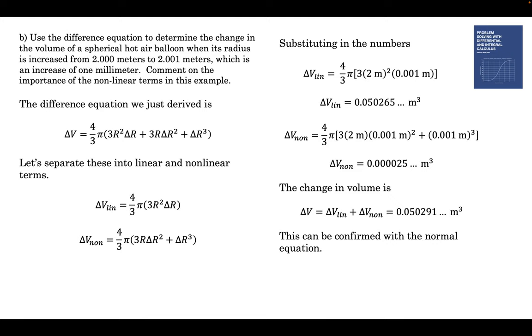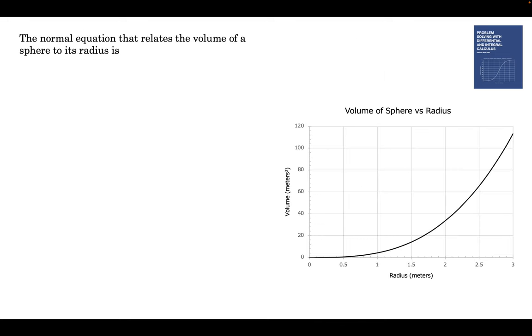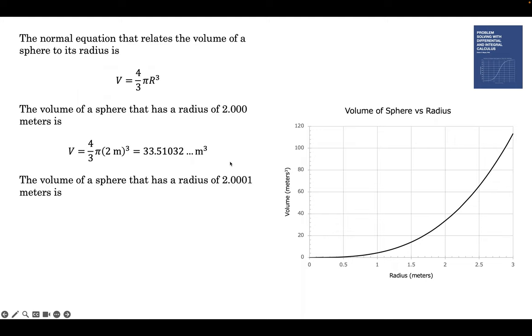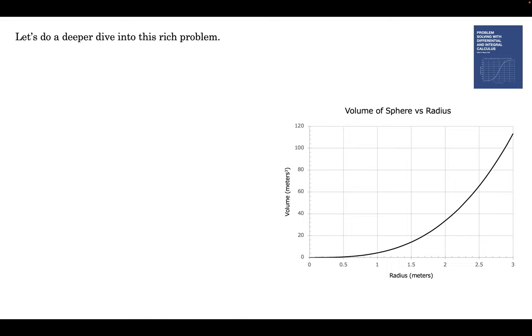And we can confirm this with the normal equation. It doesn't ask us to confirm it, but we can confirm it. So let's do it. All we do is we plug in 2 for the radius, and we get 33.5132. You look over here, 2 meters right there. The volume of a sphere that has a radius of 2.001, we stick it into the normal equation. To get the difference in the volume, we subtract, and we get the right answer. Not surprisingly. The same thing we got before. This is a rich problem, so let's keep going.